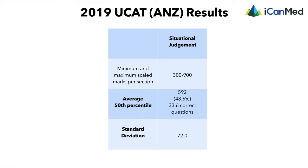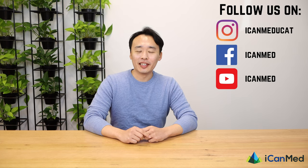Like the other sections, situational judgment is scored between 300 and 900, and the average score is 592. Situational judgment also awards partial marks — so if you are close to the correct answer you receive partial credit, which makes this section a bit harder to fail. We don't have a lot of data on exactly how universities use the SJ score, but we know it is used less stringently than the first four sections. Scoring around the average should be sufficient to pass this subtest.